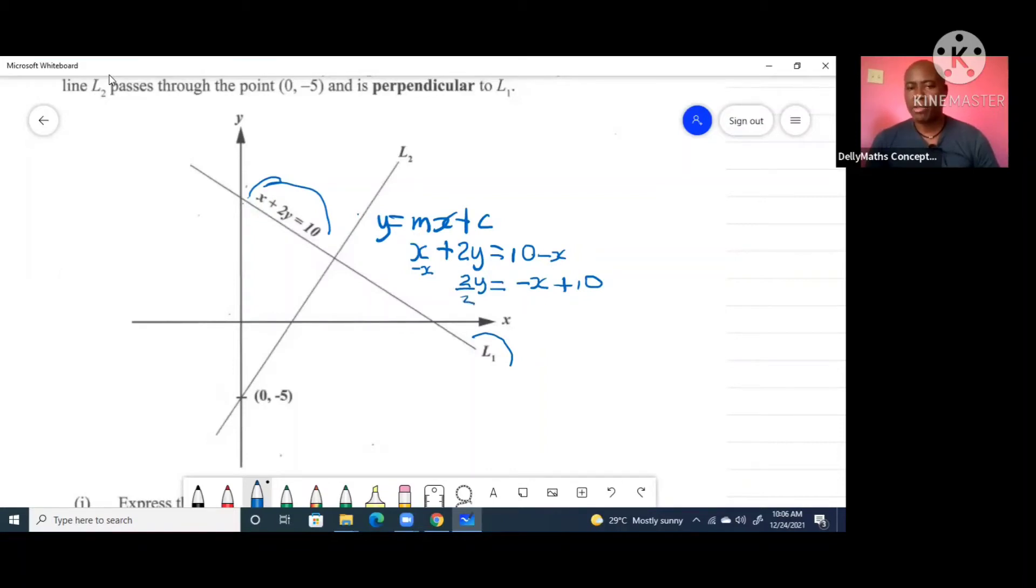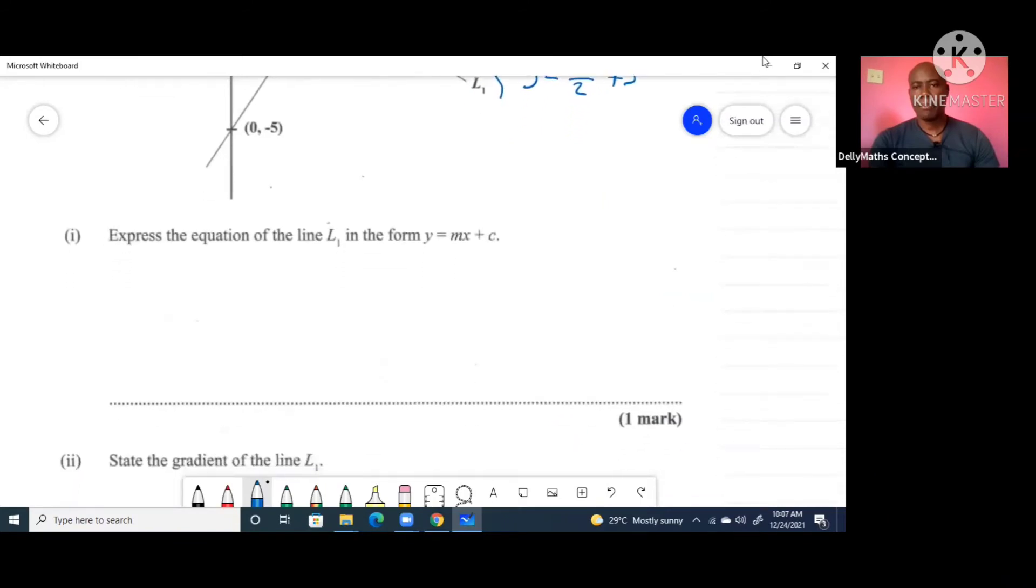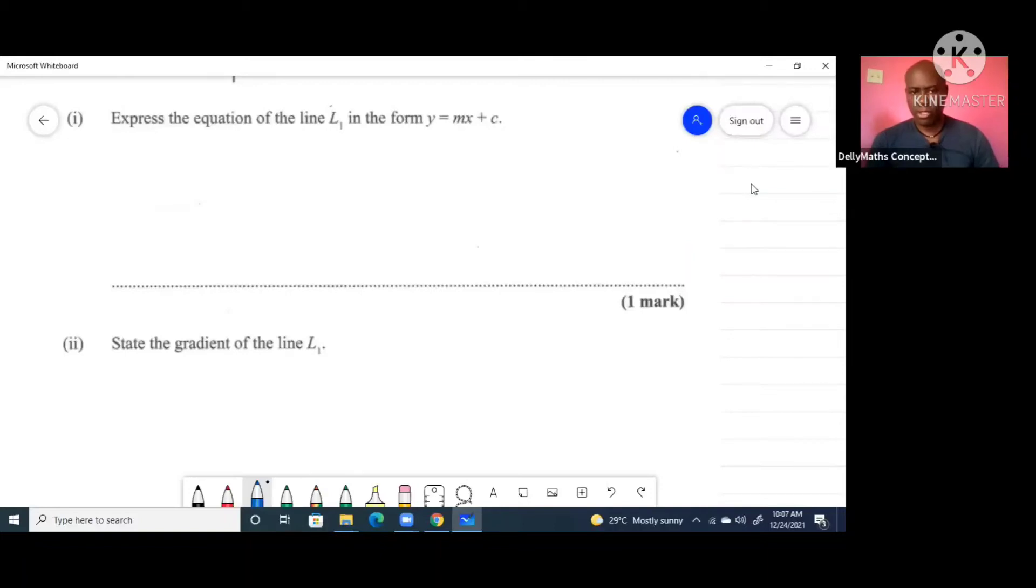At this time we're going to divide everything by 2, and in dividing this by 2 we end up with y equals negative x over 2 plus 5. That's the format that we were asked to write the equation in. So we could just write it on the line: y equals negative half x plus 5.